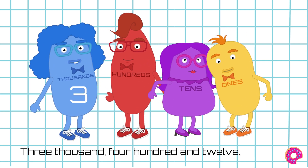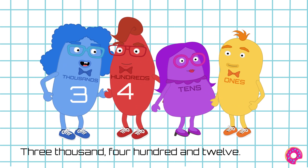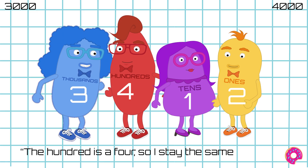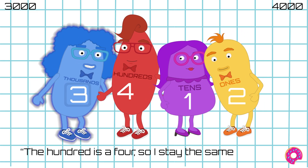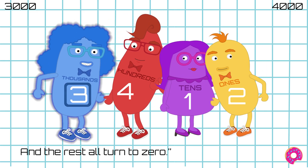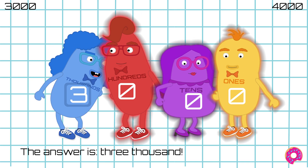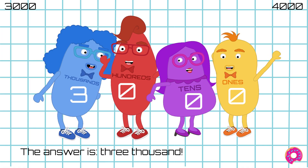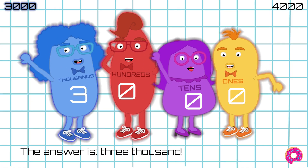Let's try. Three thousand, four hundred and twelve. The hundred is a four, so I stay the same. And the rest all turn to zero. The answer is three thousand.